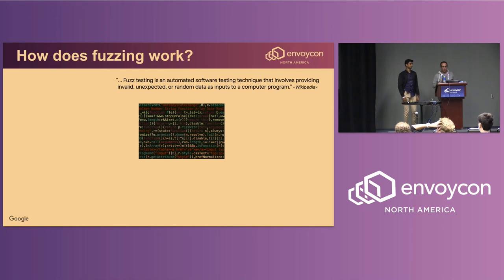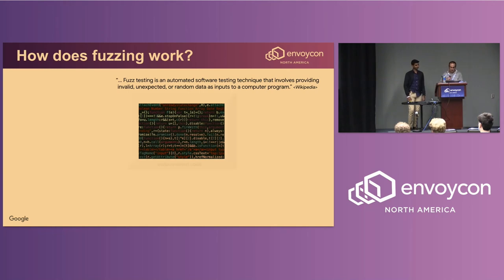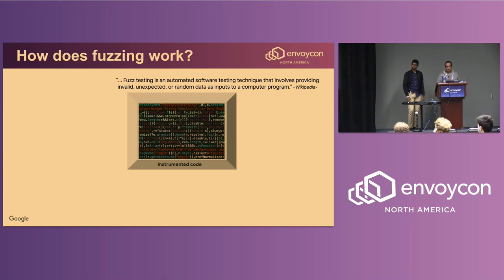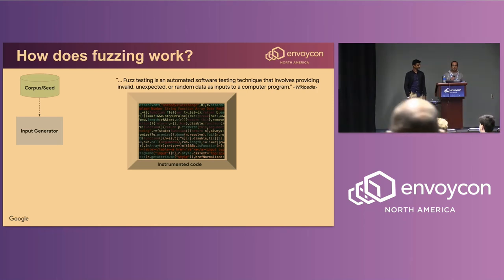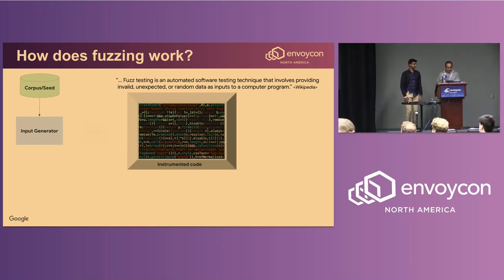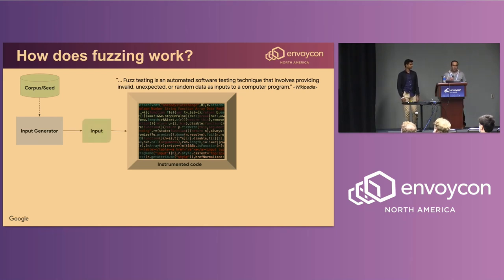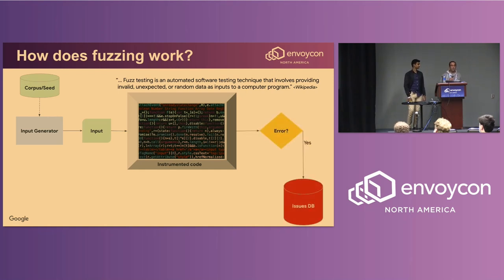This is what fuzz testing wants to address. Fuzz testing is an automated software testing technique that involves providing invalid, unexpected, or random data as inputs to a computer program. The fuzzer framework takes the code and instruments it to track which code blocks are exercised. The fuzzer reads inputs from a corpus directory as a seed to an input generator, which creates an input and executes the code. If an error occurs, an issue is added to a database.